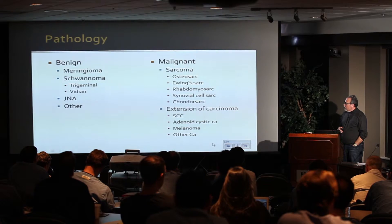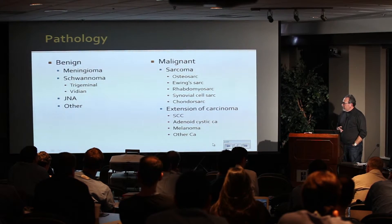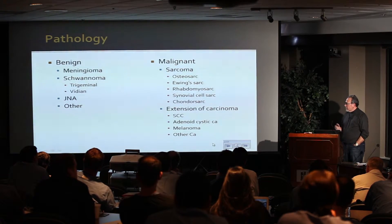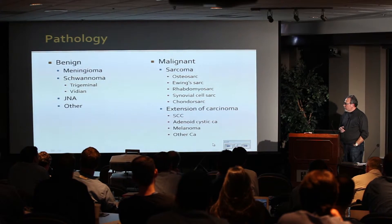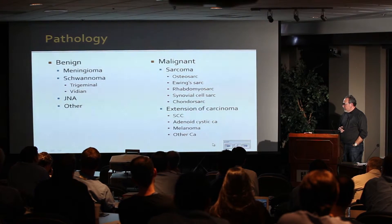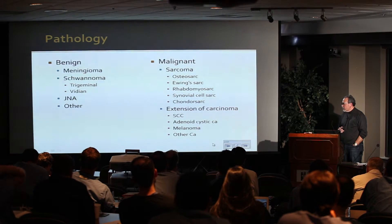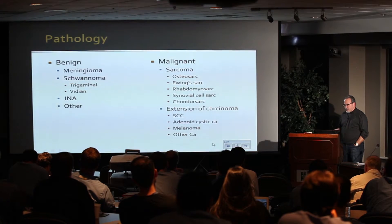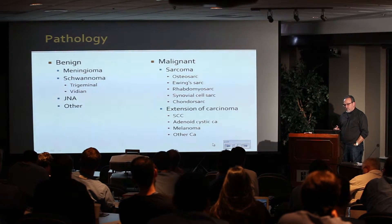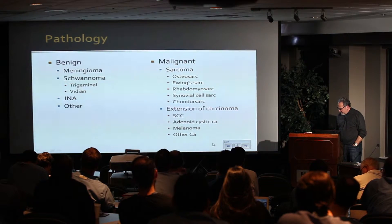Malignant ones we see a lot of. The primary infratemporal fossa malignancies are osteosarcoma, Ewing's, rhabdo, synovial cell sarcoma, and chondrosarcoma. And then we see a lot of extensions of anterior maxillary and facial carcinomas — squamous cell carcinoma, adenoid cystics — which travel typically through the trigeminal nervous system back towards the infratemporal fossa, and rarely other diseases.